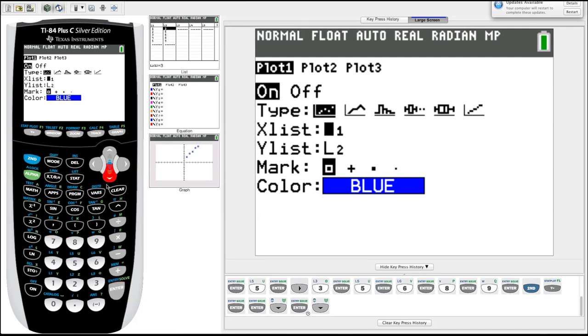Now it's asking us what list we want for our x values. It should default to list one for x and list two for y, which is exactly what we want. So then we can just go down. The mark is just the marks it'll put on the screen. Color is fine. So then what we do is we just hit graph.